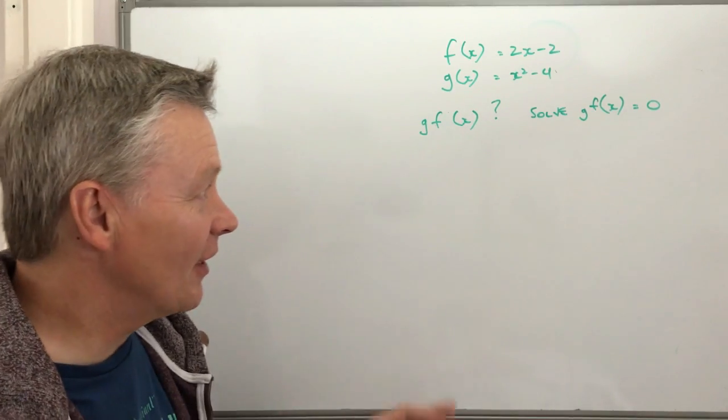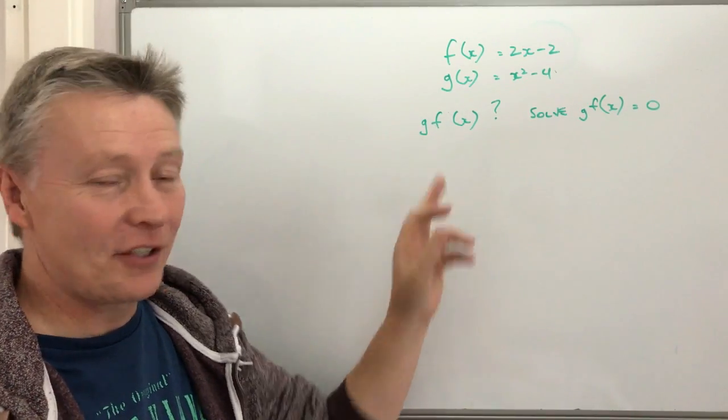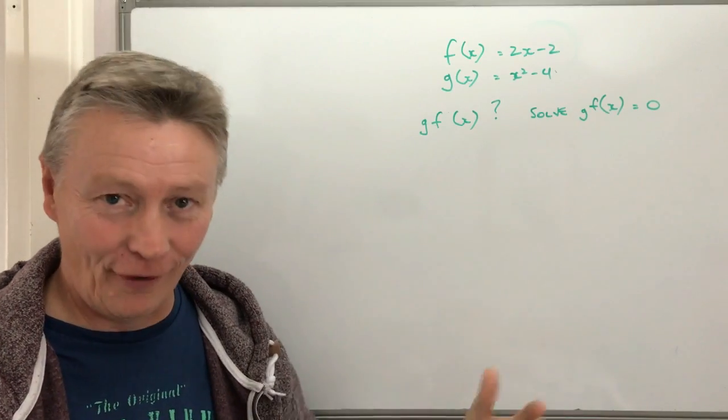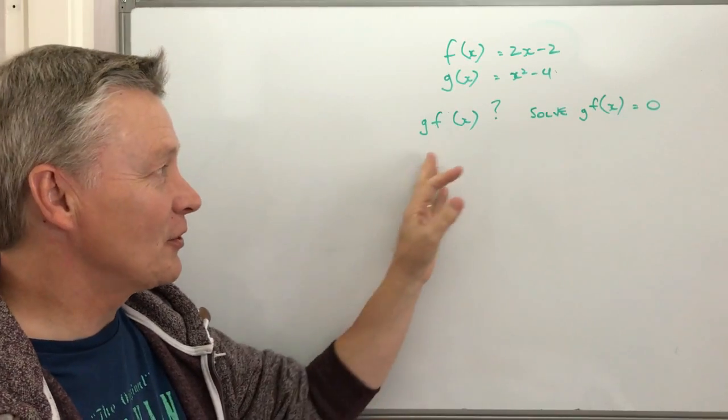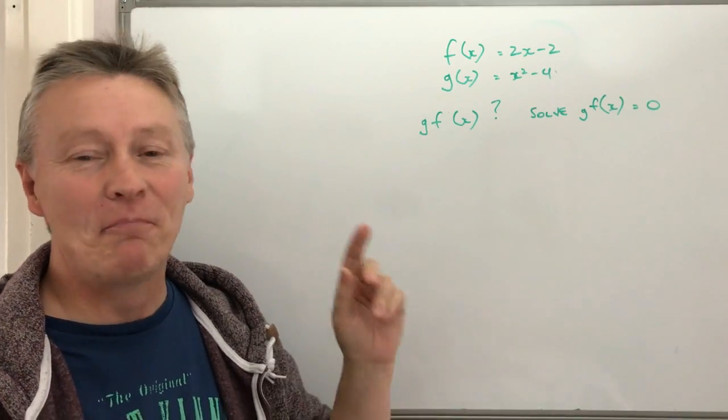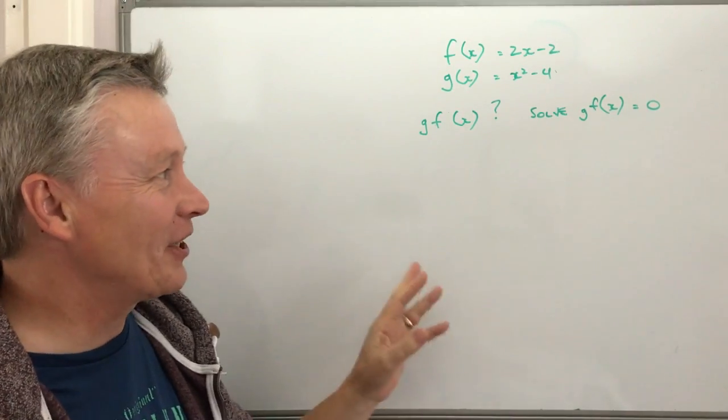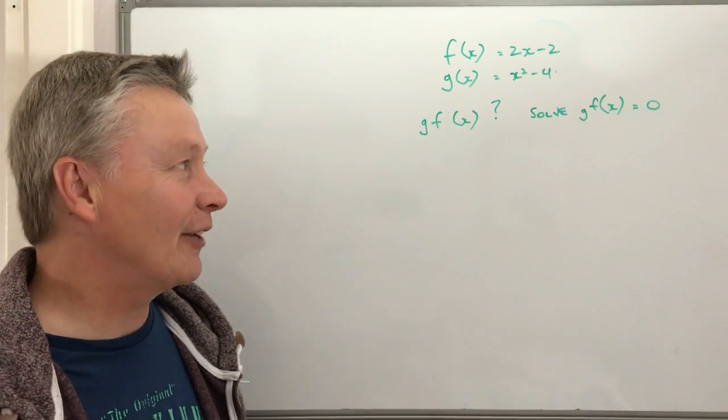A couple of ways they've done it is that they've actually changed this around. It's g f of x as opposed to in the previous ones we've talked about fg, and usually it's in alphabetical order but not in this question. So we have to be really, really careful.